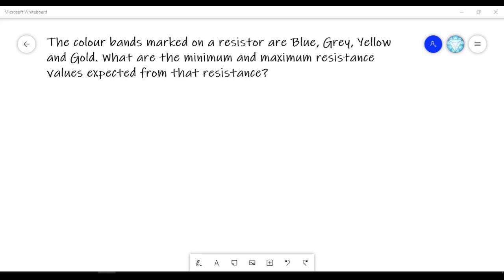The color band marked on the resistors are blue, grey, yellow and gold. What are the minimum and maximum resistance expected from that resistance?